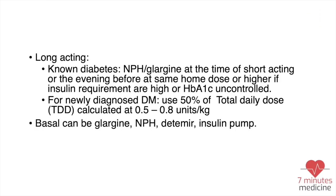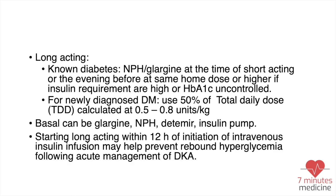For long-acting insulin: if the patient is a known diabetic, give long-acting insulin at the same home dose or higher if insulin requirements were high during the infusion, or if HHS showed uncontrolled diabetes. If the patient has newly diagnosed diabetes mellitus, use 50% of the total daily dose calculated at 0.5 to 0.8 units per kilogram. Basal insulins that can be used include Glargine, NPH, Detemir, and insulin pump.